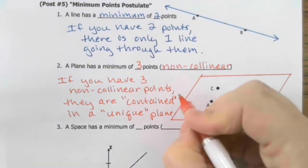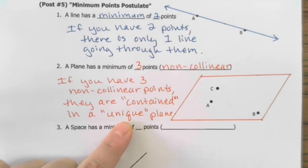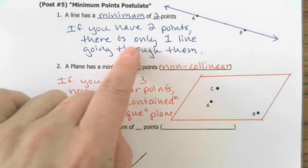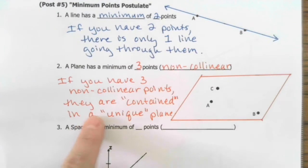Contained is just like it means in English. Contained, it's inside. But unique means no other planes are possible. Only one plane is possible. So this could have been written one unique line going through them. This could be written one plane can contain them.